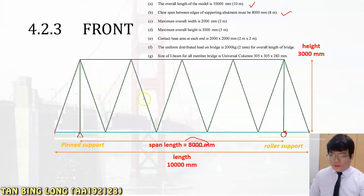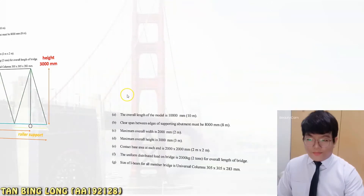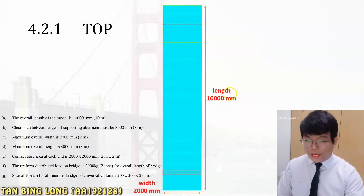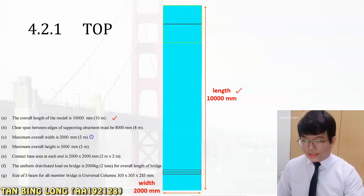The overall height is from bottom to top, which is 3,000 millimeters. Next, we look at the top view, which has the same length as before — 10,000 millimeters — and the width is 2,000 millimeters.